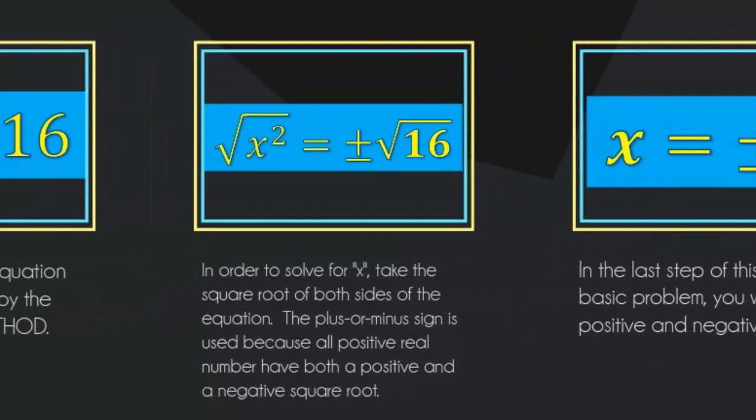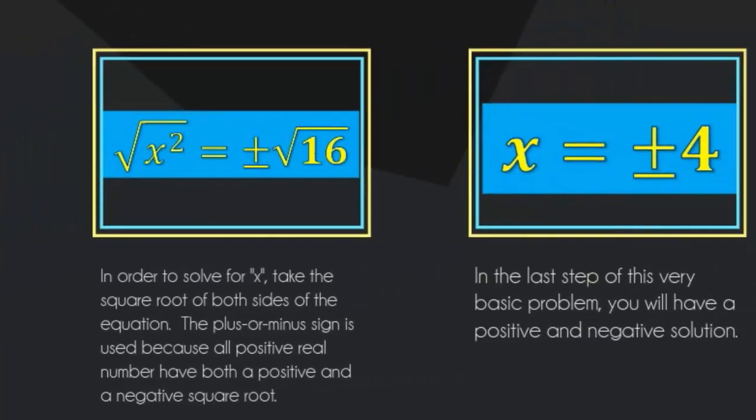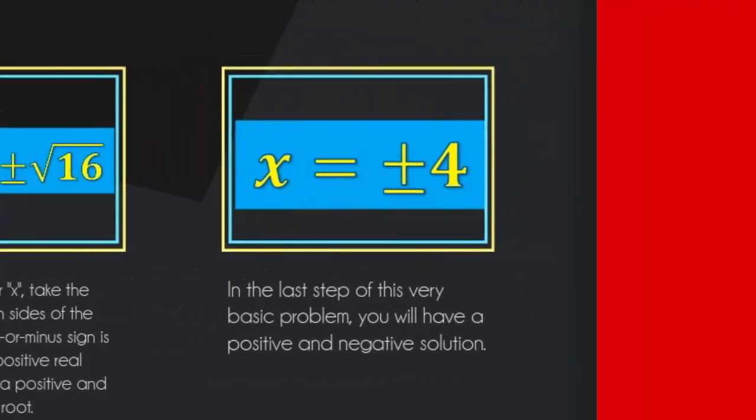We're going to use the square root method to solve this equation. Take the square root of both sides. Take the square root of the quadratic term, the square root of the constant term, and always put a plus or minus in front of the square root of the constant term. That leaves us with the solutions x equals positive or negative 4. That's really all there is to it.